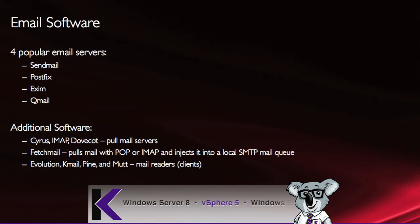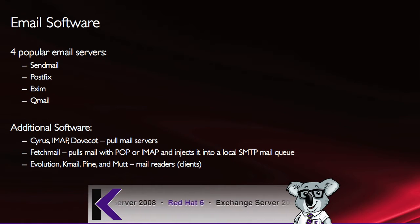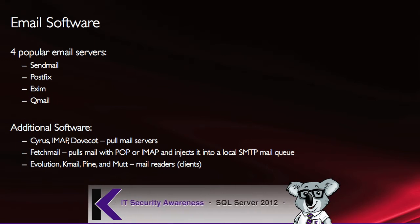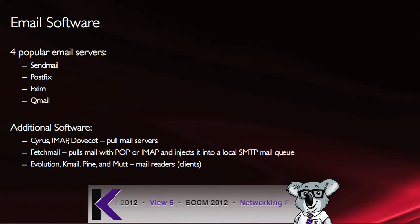There are four popular email servers: Sendmail, Postfix, Exim (E-X-I-M), and Qmail. There are also additional software such as Cyrus IMAP and Dovecot, which pull the mail from the location.